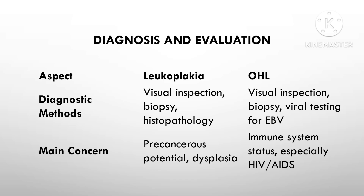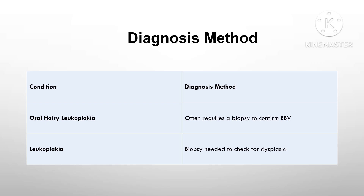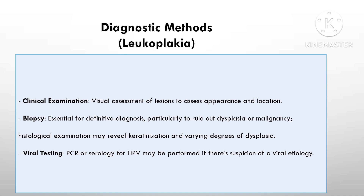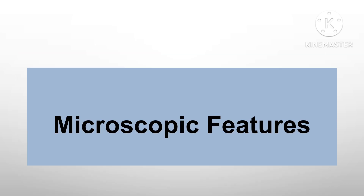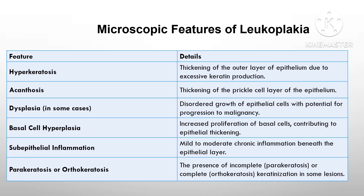Both conditions can be diagnosed through visual examination. For leukoplakia, visual assessment evaluates appearance and location, and biopsy is essential for definitive diagnosis — particularly to rule out dysplasia or malignancy. Histological examination may reveal keratinization and varying degrees of dysplasia. Viral testing for HPV may be performed if viral etiology is suspected. For oral hairy leukoplakia, biopsy may be performed to confirm the diagnosis, revealing ballooning epithelial cells, which is a hallmark of this lesion, along with keratinocytes. Viral testing detects Epstein-Barr virus through serological tests or PCR if necessary.